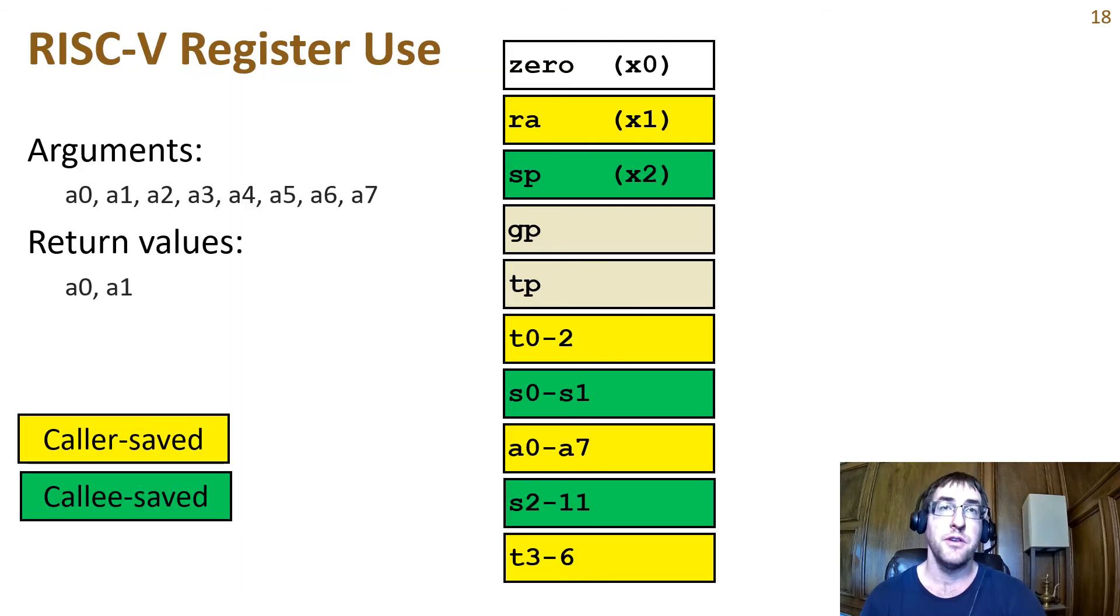Here we have the full set of general purpose registers color coded to show which are callee saved and caller saved. Remember that a callee saved register needs to be saved in a function before modifying it and restored to its original value before returning.